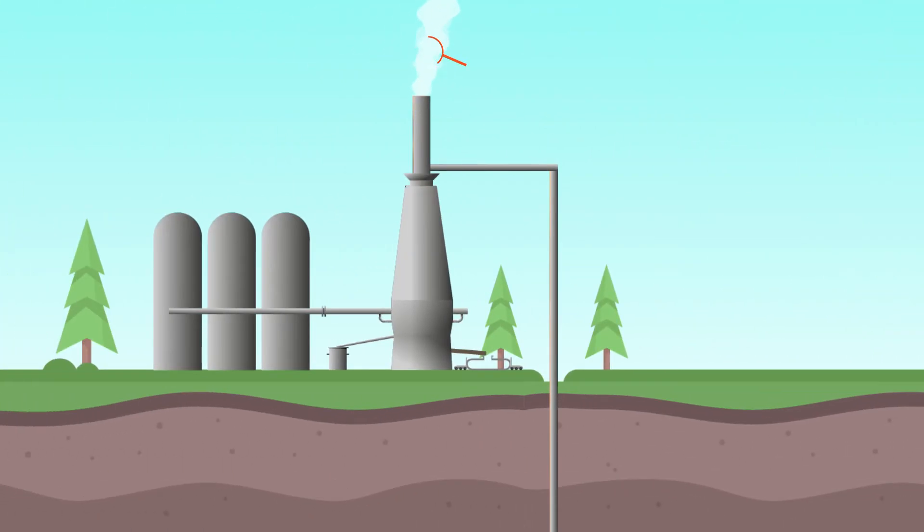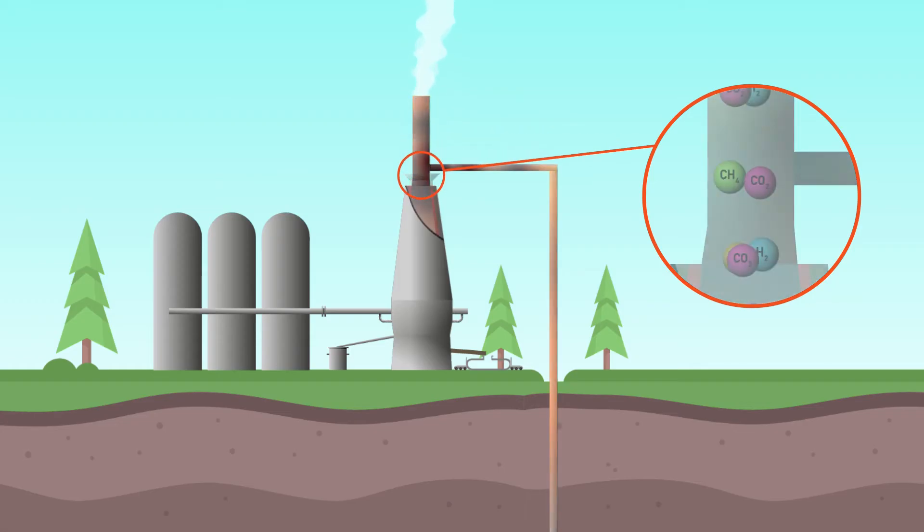Waste flue gases usually contain other gases besides carbon dioxide, such as hydrogen, carbon monoxide, nitrogen oxides, and methane. In a simple carbon capture technique, waste flue gases are intercepted before the exit to the atmosphere.